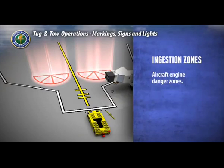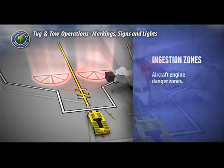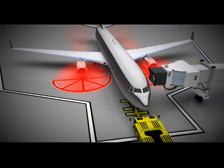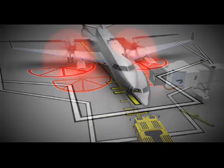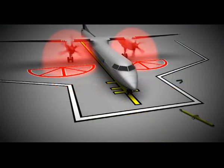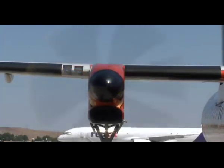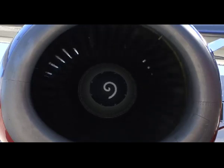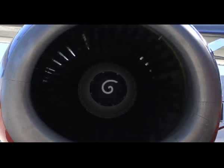Aircraft engine ingestion zones are indicated by red-slashed half-circles, which represent the front of the engine's intakes or propellers. This is an extremely dangerous area when the aircraft engines are running. Extreme caution and awareness are necessary when an aircraft engine is running, even at idle. The consequences of entering this area can be deadly.